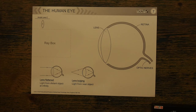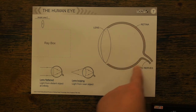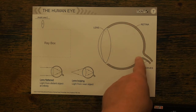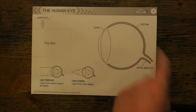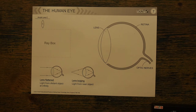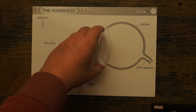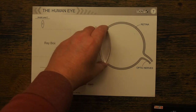Here's my diagram of the human eye. You can see the retina at the back, which collects the light information, and the optic nerve, which takes the information to the brain. The lens of my eye is represented by this prism here.